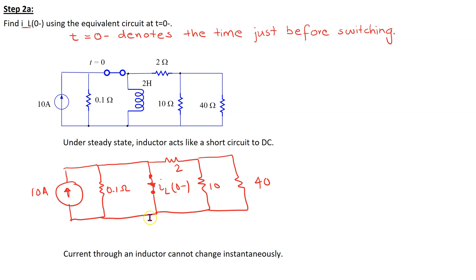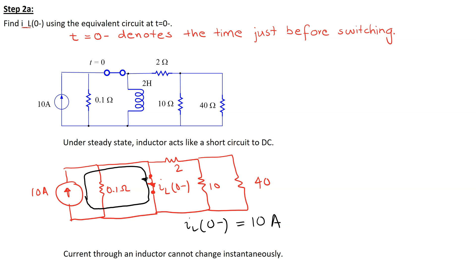In this circuit, we can see that we have a short circuit branch. Since current takes the path of least resistance, the current produced by the 10 amp current source will only flow through this path. That means no current will flow through the 0.1 ohm resistor or this network of resistors. Therefore, the current IL(0 minus) is equal to 10 amps. Also, since current through an inductor cannot change instantaneously, IL(0 plus) is equal to IL(0 minus), and this will be equal to 10 amps.